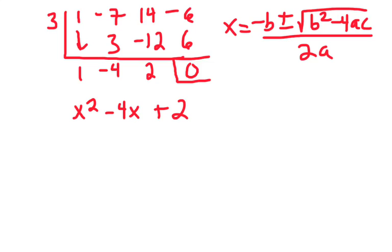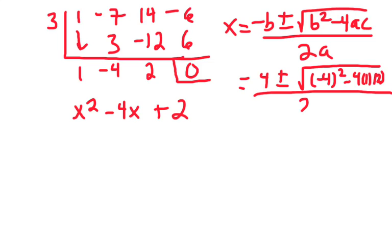All right, so let's solve this, sub our stuff in. So I have negative 1 plus or minus. Negative 1, what am I talking about? So negative 4, so negative negative 4, so positive 4. Here we go. That's more like it. Then negative 4 squared. I'm going to run out of space here. Minus 4 and a is 1. And then c is 2. All over 2 times 1.